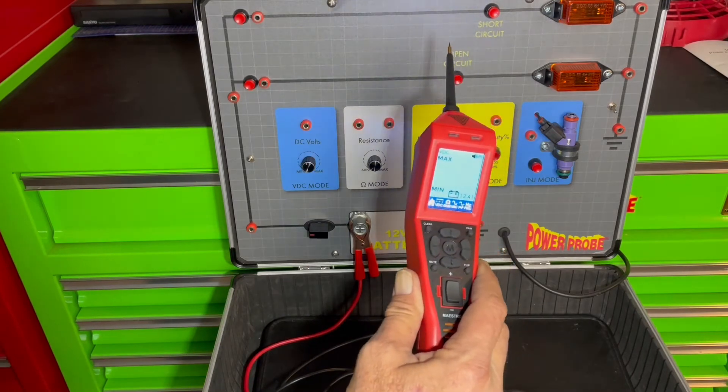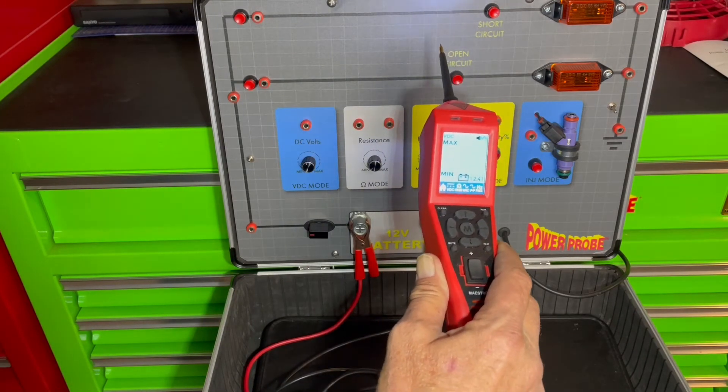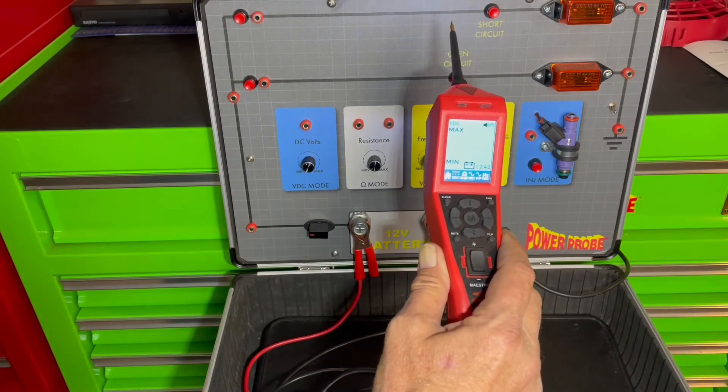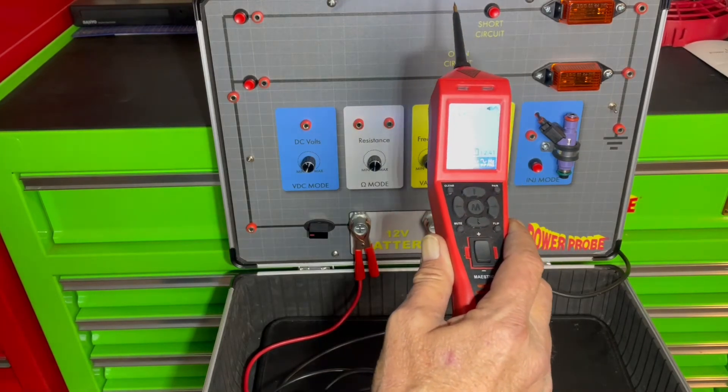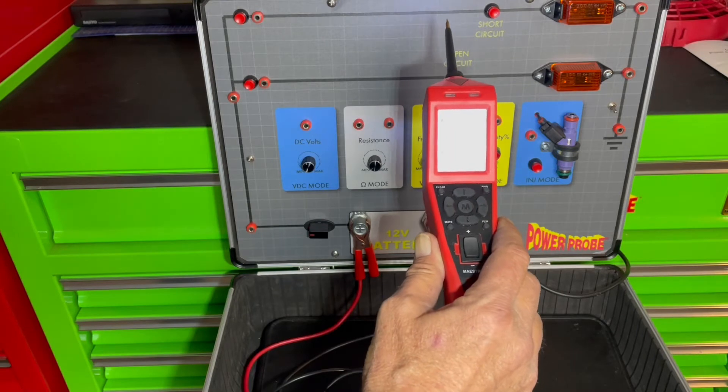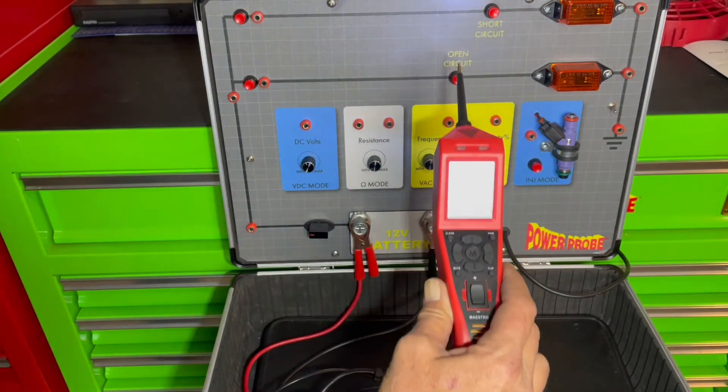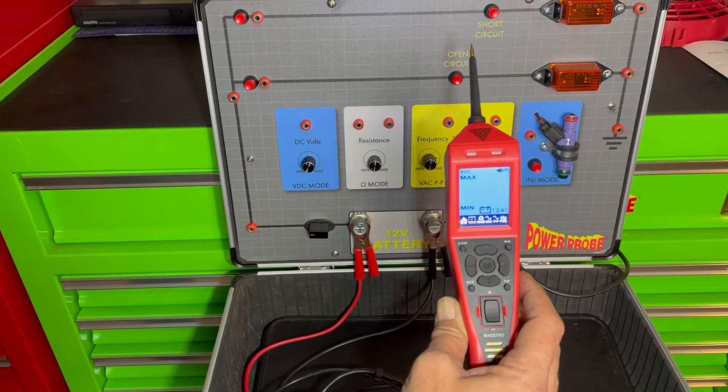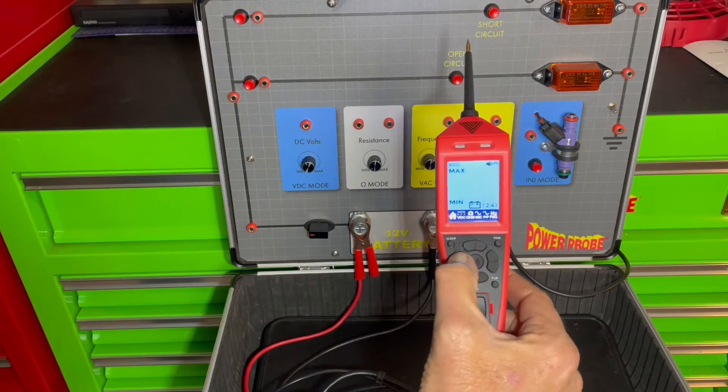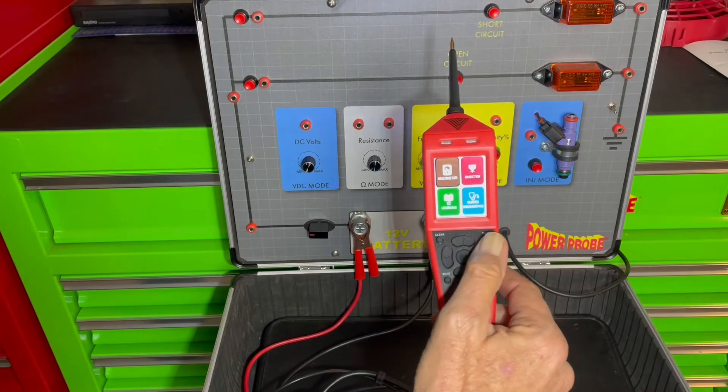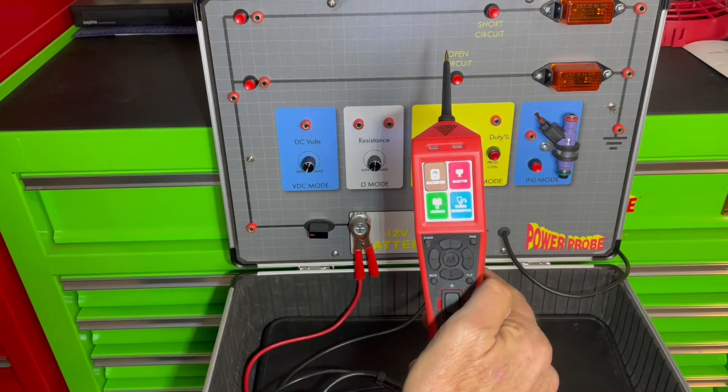So the Maestro has the ability to show waveforms or voltage over time graphing. Now the other big difference between the Maestro and the Power Probe 4, let's go to our home screen. Notice this button here, it says pair on it.